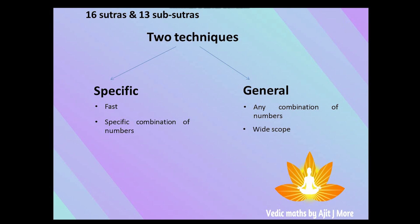One small example: specific technique is like finding the square of a number ending with 5, whereas one example of a general technique is multiplication of any two numbers using the crisscross method — we are going to see this in our subsequent sessions.